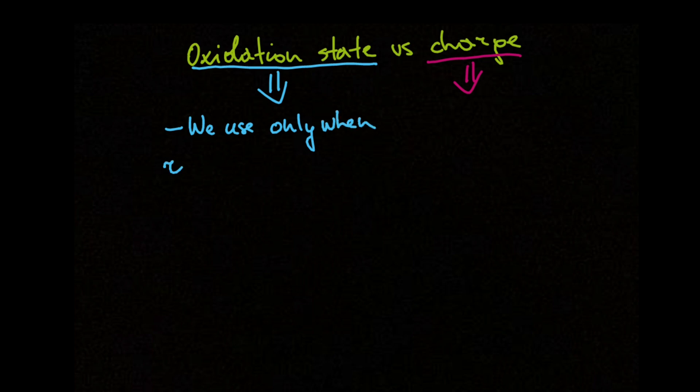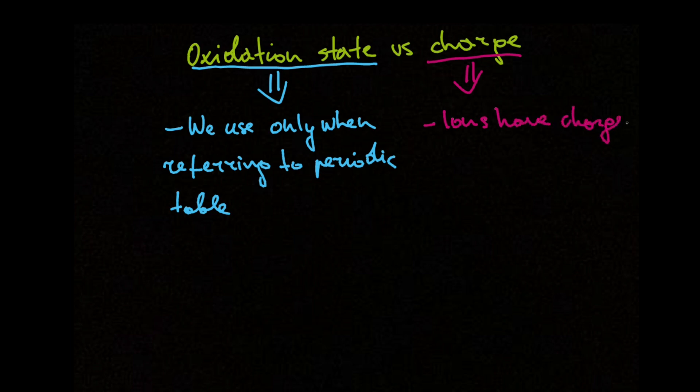Well, when we are using the term oxidation state, we are talking about the possibility for an element to become an ion. That's why we only use oxidation state when we are talking about the periodic table, but never when we are talking about ions. Ions have charges but not oxidation states.